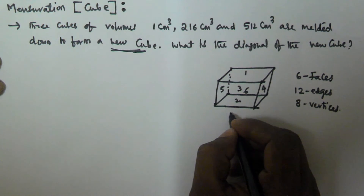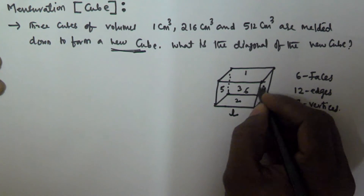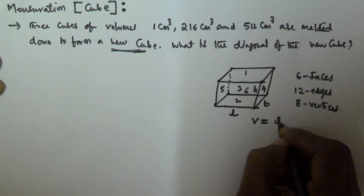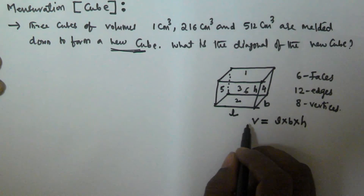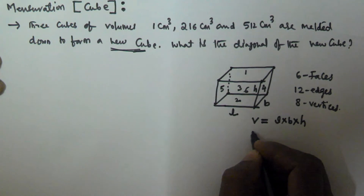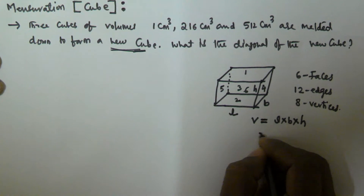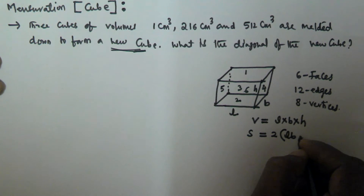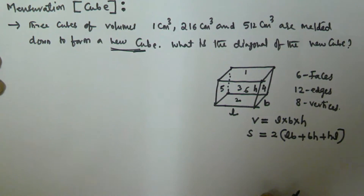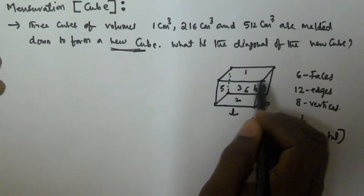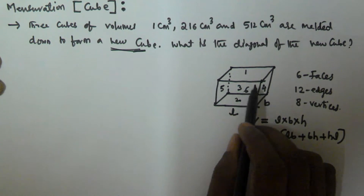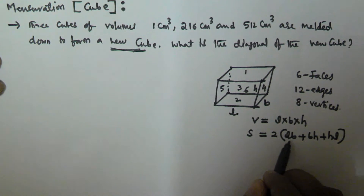If the length of this box is L, its breadth is B, and its height is H, then the volume of this cuboid is given by L × B × H. The total surface area is given by 2 × (LB + BH + HL). Each face is a rectangle, and there are 6 such surfaces.